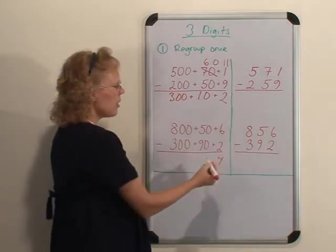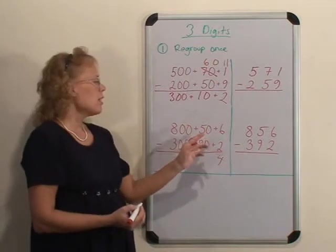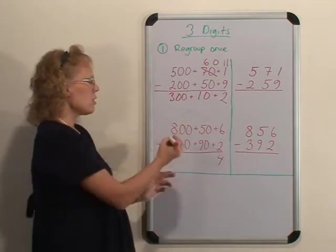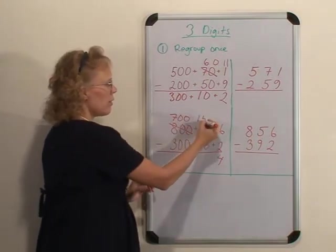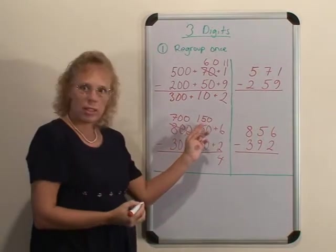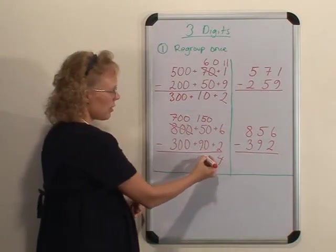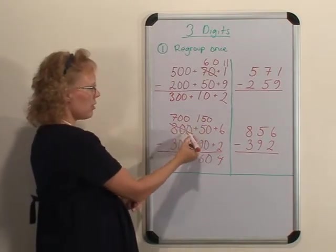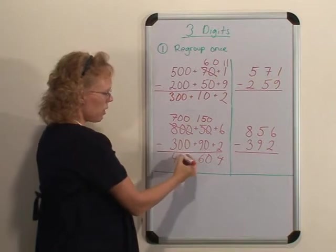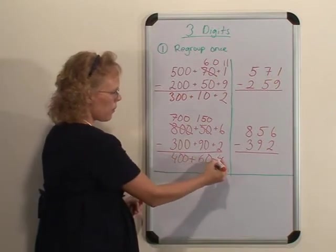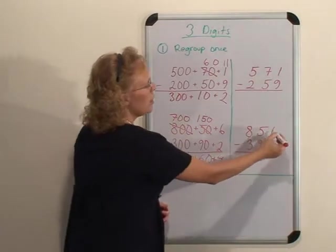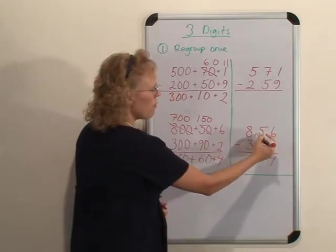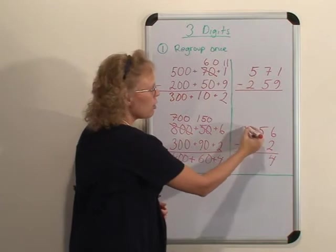Now in this situation we have to borrow from the hundreds or regroup from hundreds to tens. 6 minus 2 you can subtract, but then here in the tens you have to go to the hundreds and take 100, leaving 700, and move it here so this becomes 150. 150 minus 90 is 60, and then here 700 minus 300 is 400.